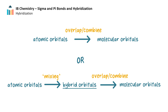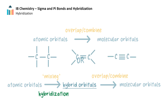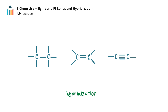Mixing of atomic orbitals to form new types of atomic orbitals is called hybridization. Hybridization of atomic orbitals in carbon atoms is the reason for carbon's ability to form four bonds — either single bonds, double bonds, or triple bonds. Let's investigate how hybridization occurs.